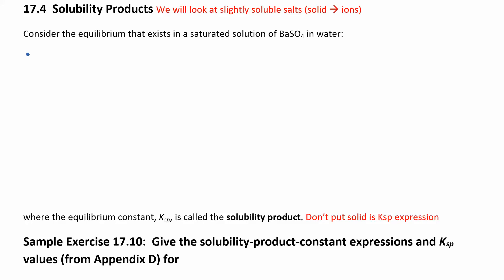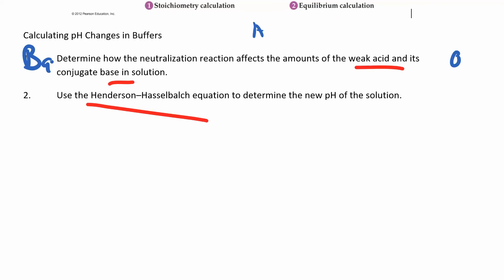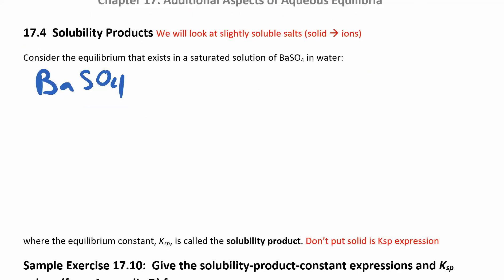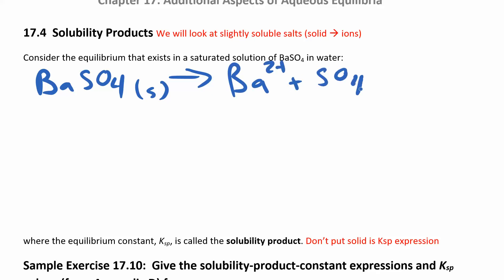Let's look at barium sulfate. Barium sulfate solid is going to dissociate into barium ions and sulfate ions. You'll need to know the charges of these ions — that's where knowing your polyatomic ions helps. Sulfate has a minus 2 charge; barium is in group 2 so it has a plus 2 charge. The K for this reaction is called the Ksp — the SP stands for solubility product.